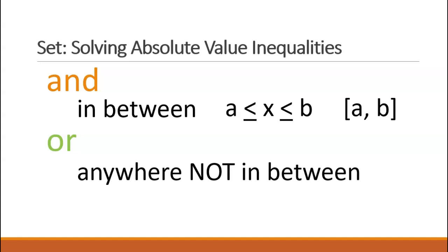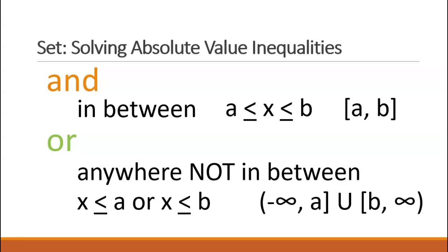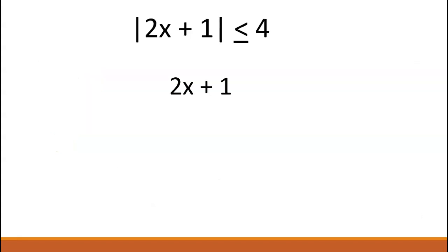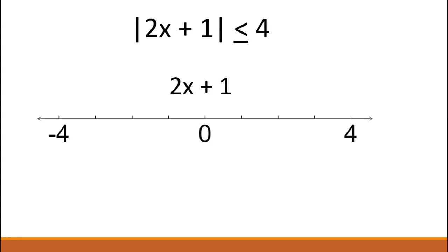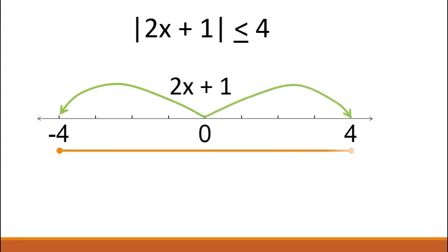In class you discovered that if an absolute value is less than a value, its distance from zero has to be less than that value. This makes our solution set be bounded, or in between two values. This is an 'and' situation.